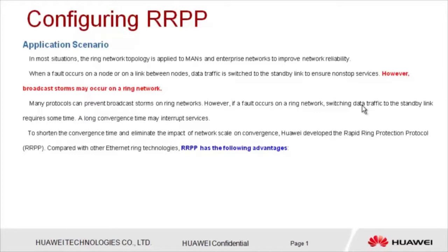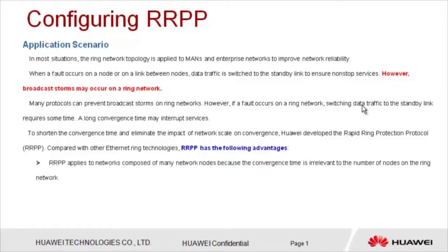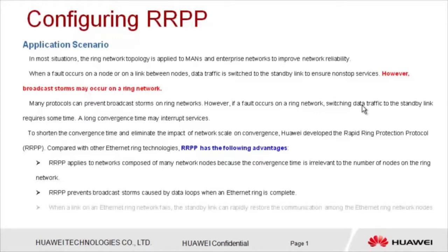Compared to other Ethernet ring technologies, RRPP has the following advantages. First, RRPP applies to networks composed of many network nodes because the convergence time is irrelevant to the number of nodes on the ring network. Second, RRPP prevents broadcast storms caused by data loops when an Ethernet ring is complete. Third, when a link on an Ethernet ring network fails, the standby link can rapidly restore communication among the ring network nodes.